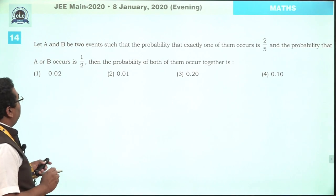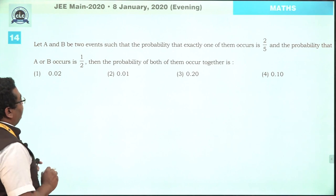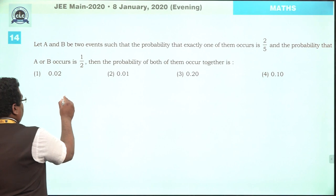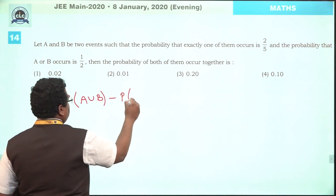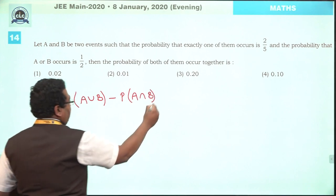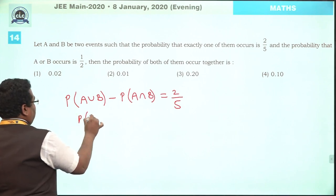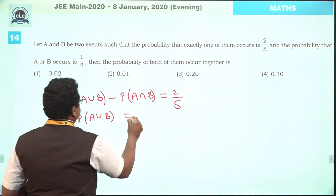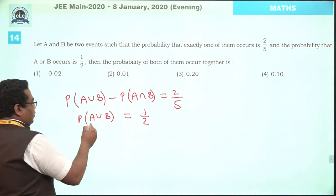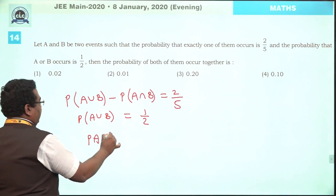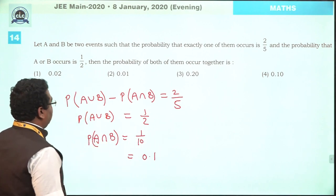Question number 14. Let A and B be two events such that the probability that exactly one of them occurs is 2/5, and the probability that A or B occurs is 1/2. The probability of exactly one occurring equals P(A∪B) minus P(A∩B) equals 2/5. Putting P(A∪B) equals 1/2 in this equation, we find P(A∩B) equals 1/10, that is 0.1.